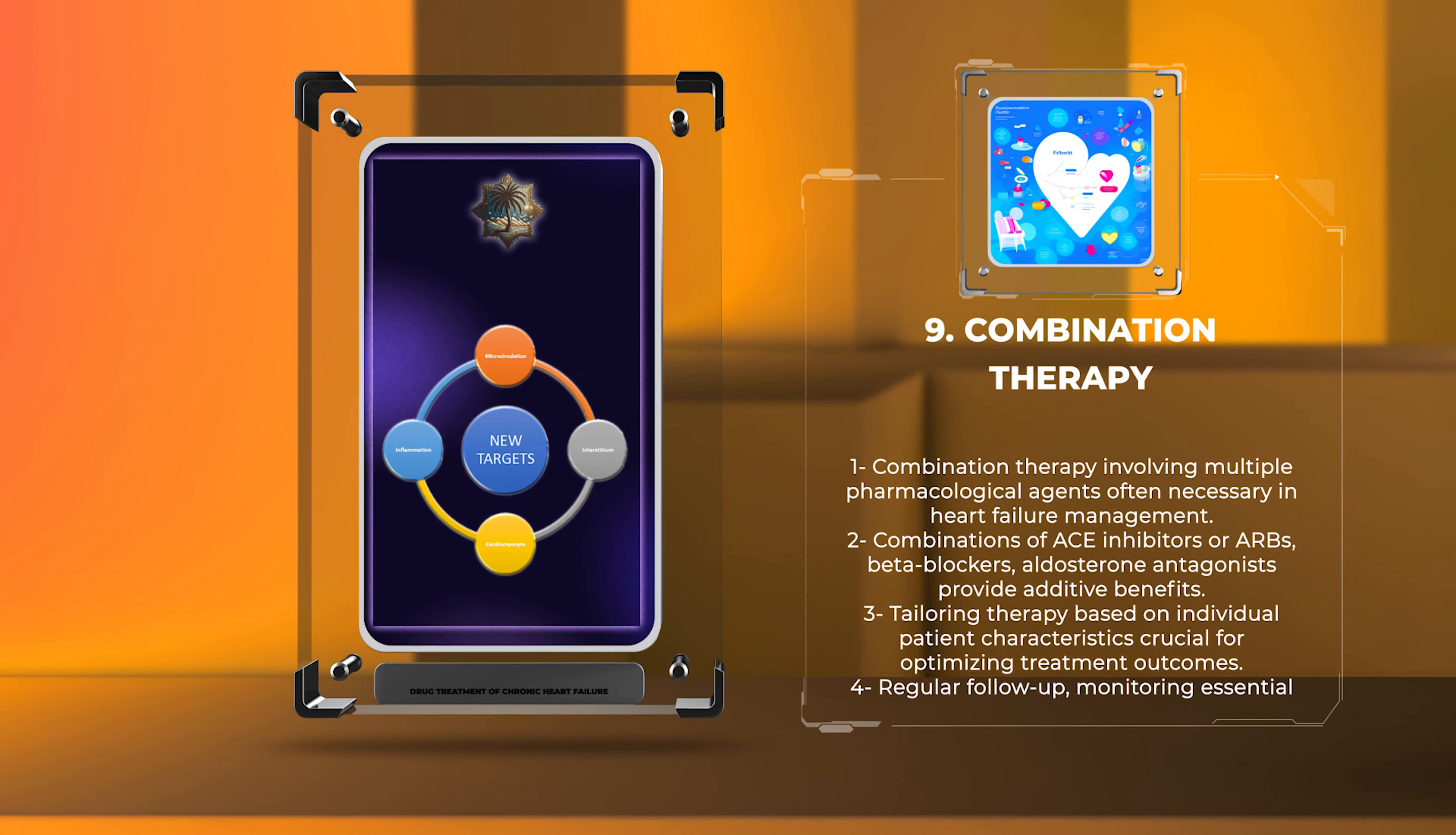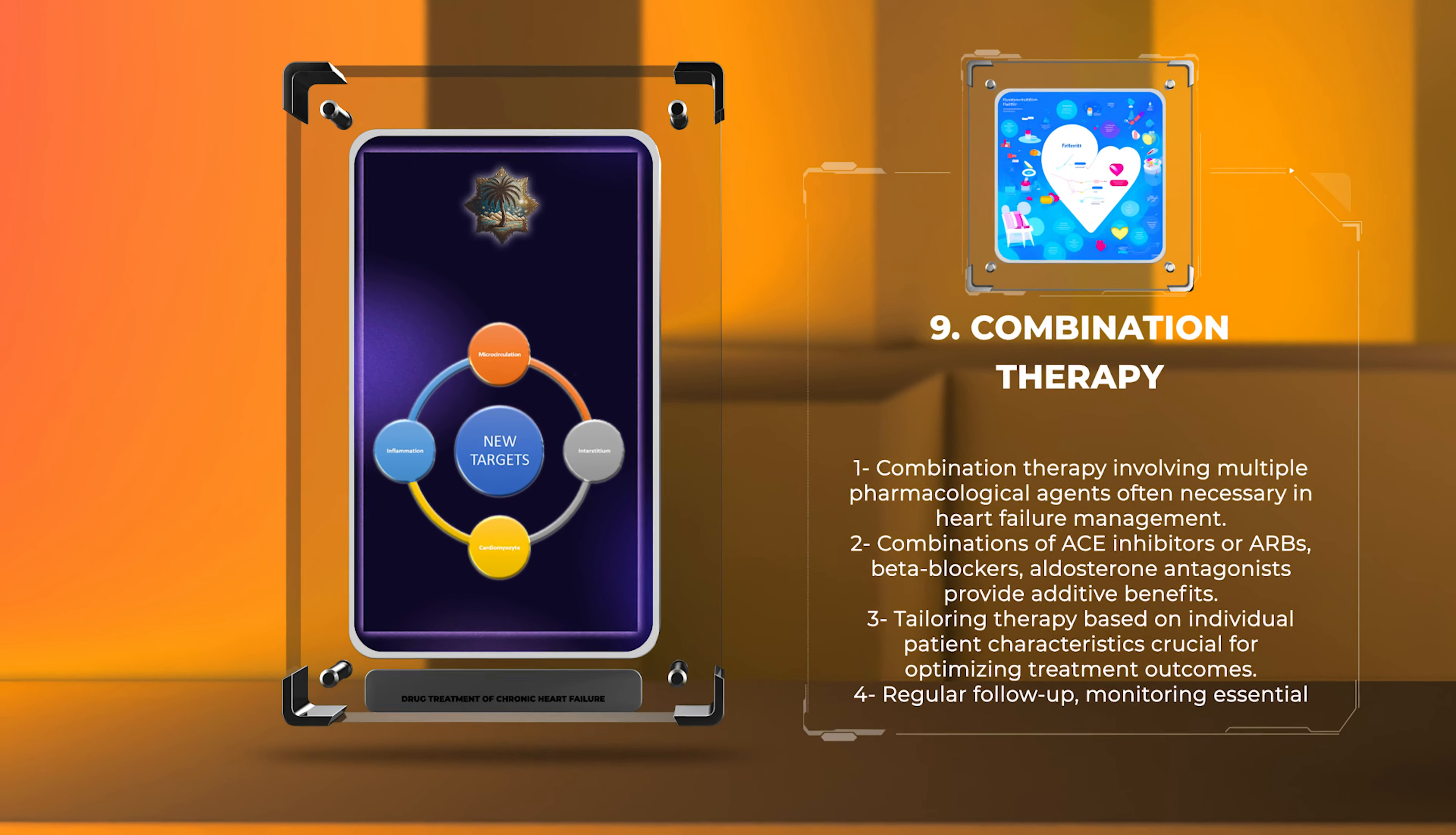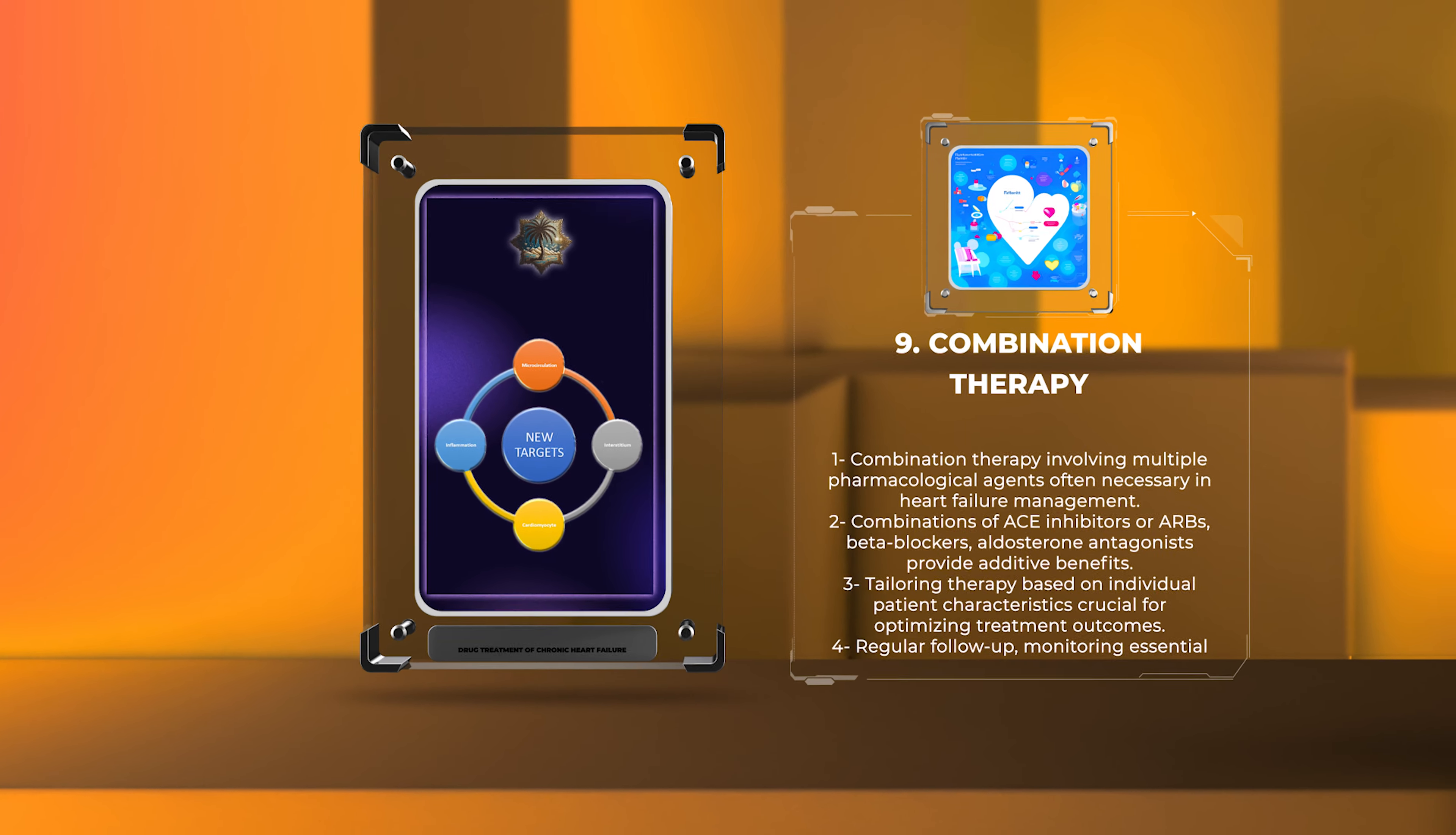Tailoring combination therapy based on individual patient characteristics, such as ejection fraction, symptoms, and comorbidities, is crucial for optimizing treatment outcomes. Regular follow-up and monitoring of patients on combination therapy are essential to ensure efficacy and safety.